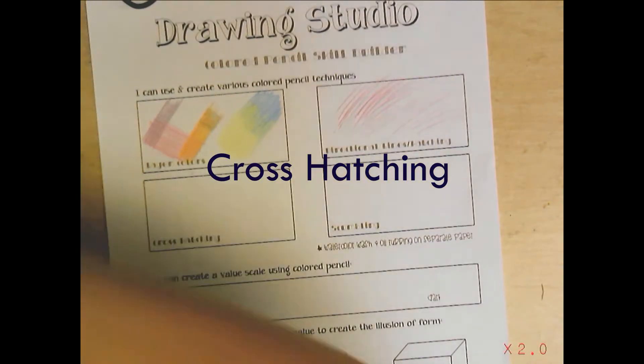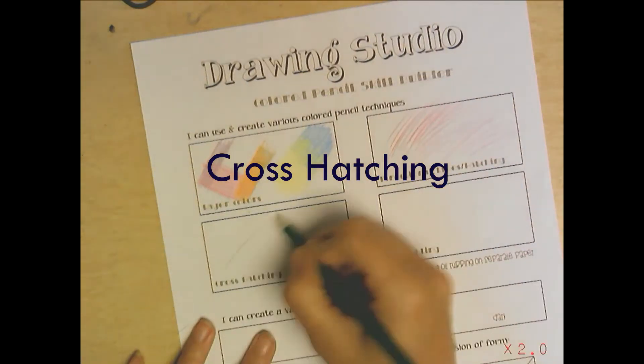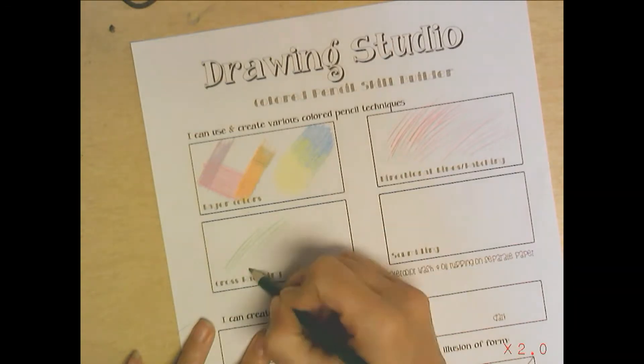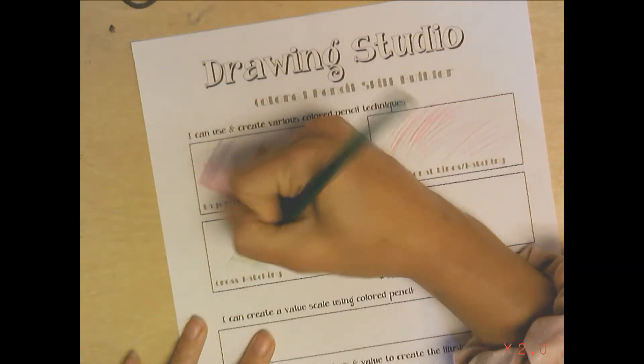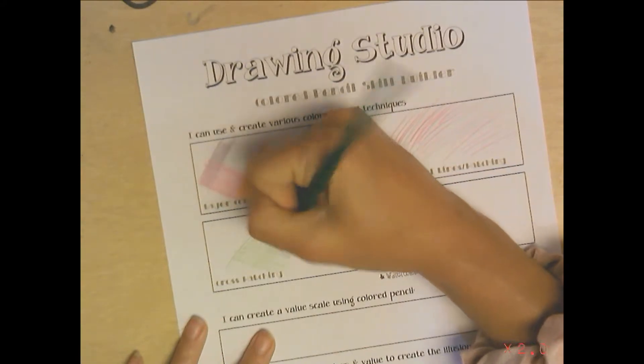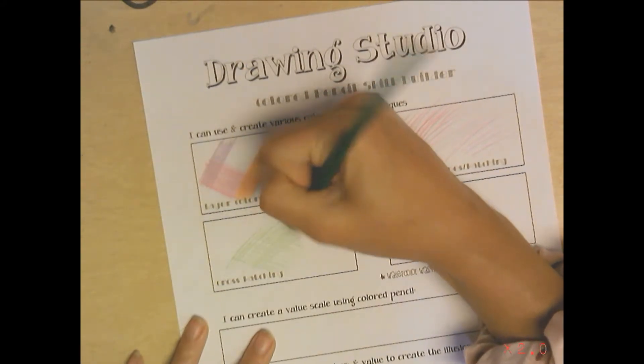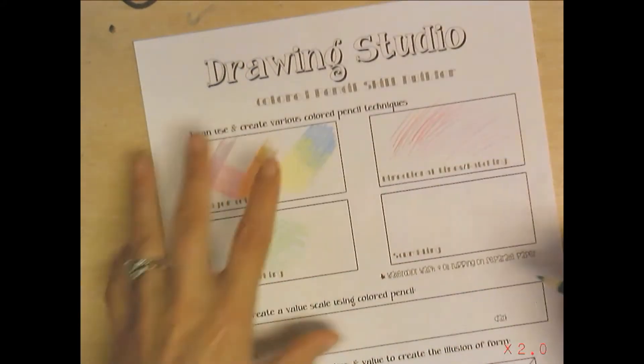Next is cross hatching. Same idea - you make the lines go one direction but then you cross and make them go the other direction. This is sometimes good for shading if you want an area to look a little darker.